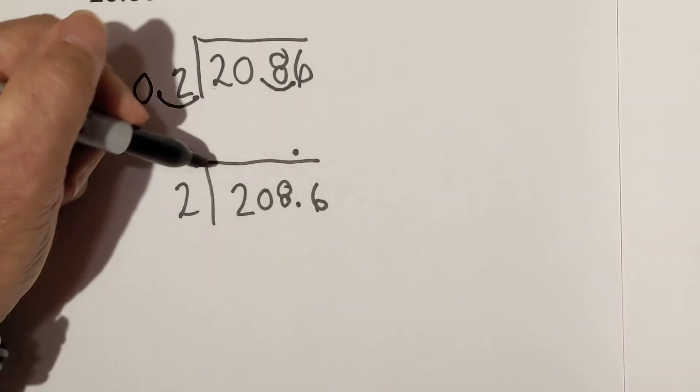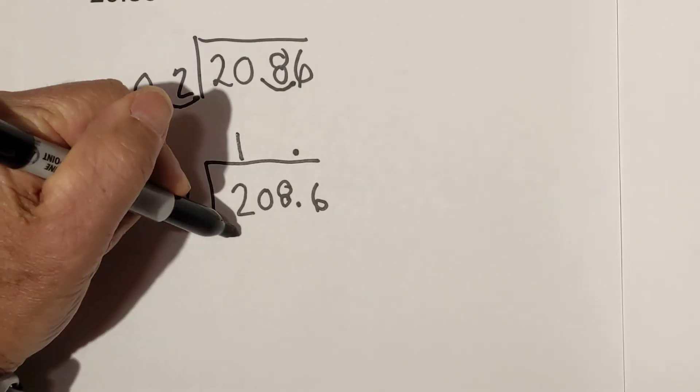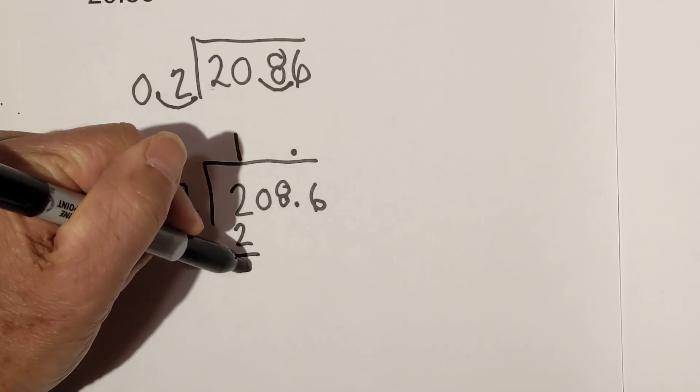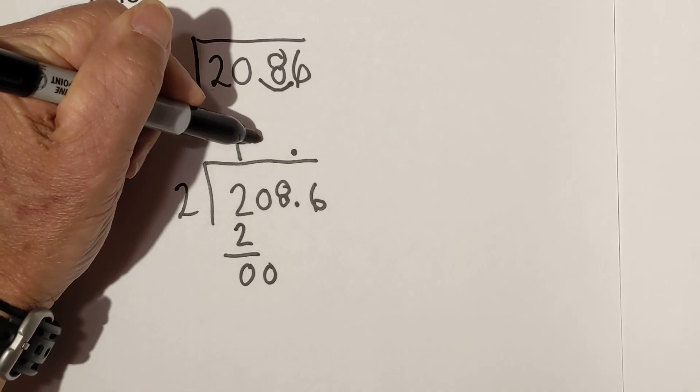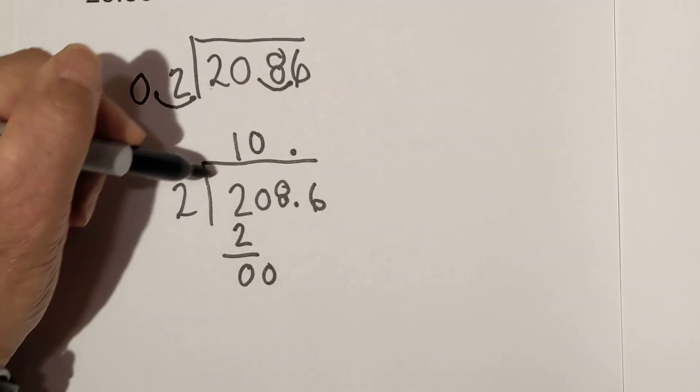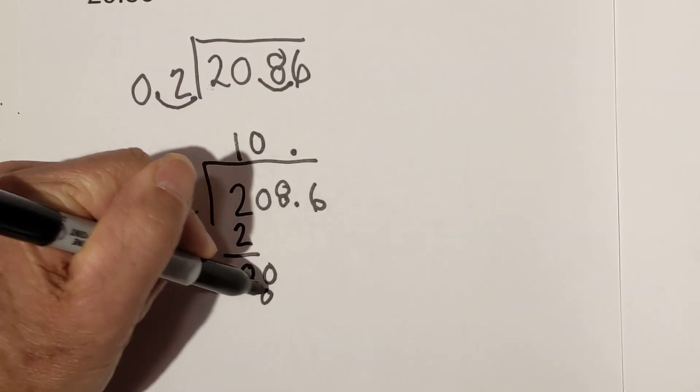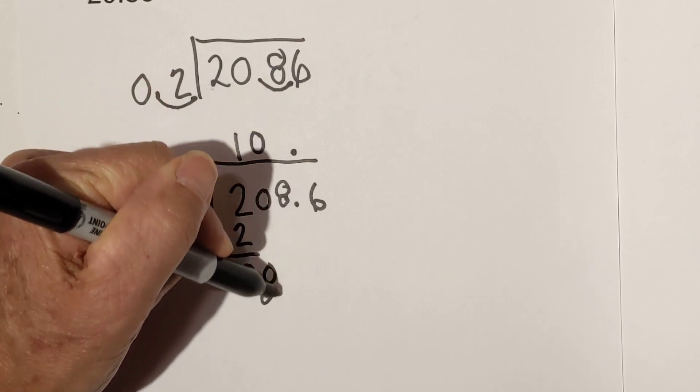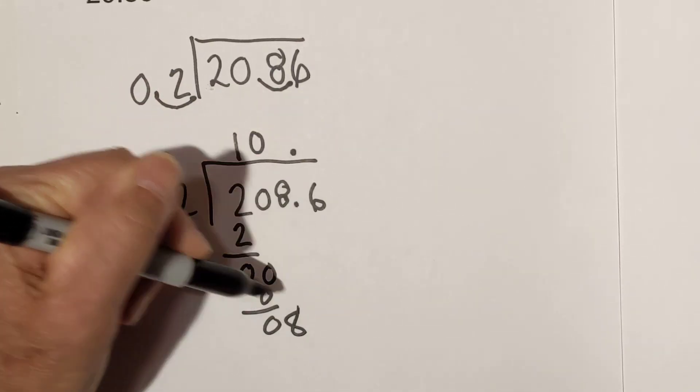2 goes into 2 one time. 1 times 2 is 2. Bring down the 0. 2 goes into 0 zero times. 0 times 2 is 0. So now we bring down the 8. 2 goes into 8 four times. 4 times 2 is 8.